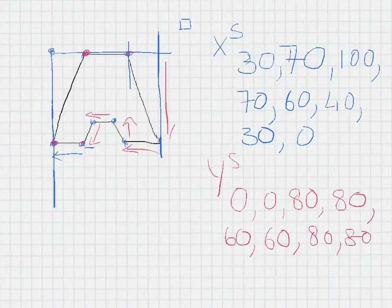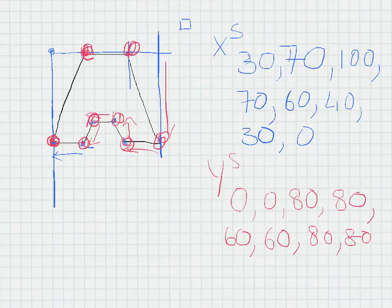Okay. So just to quickly check, I've got how many points in total? I've got one, two, three, four, five, six, seven, eight. So I need to check that I've got eight x points. One, two, three, four, five, six, seven, eight. And that I have eight y points. So one, two, three, four, five, six, seven, eight.